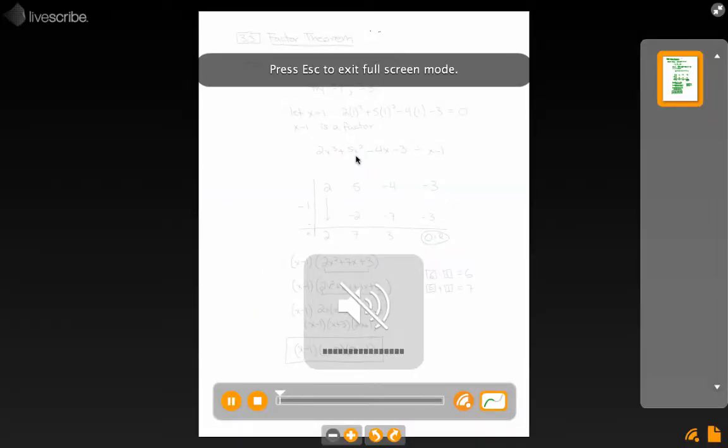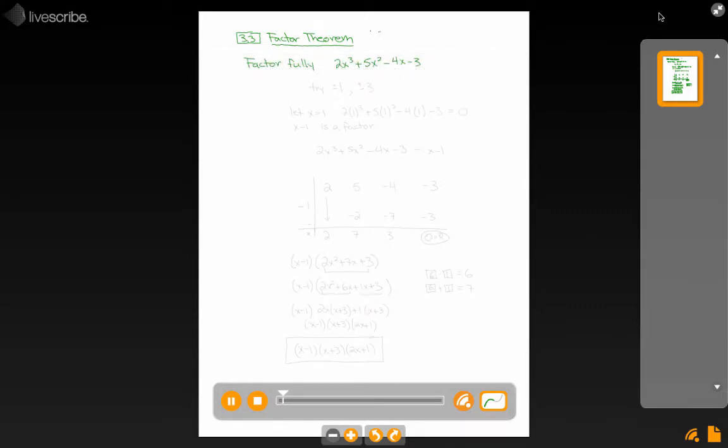Our next example comes out of section 3.3, and we're asked to factor this polynomial 2x cubed plus 5x squared minus 4x minus 3. The instructions are simple, just factor fully.